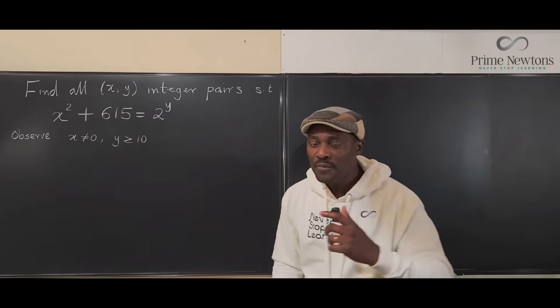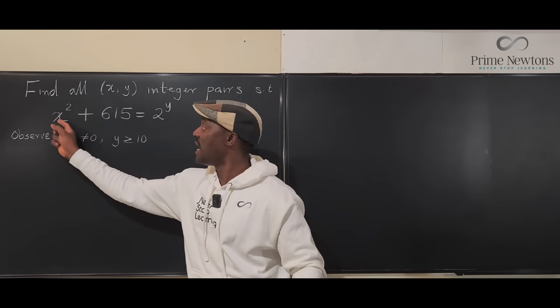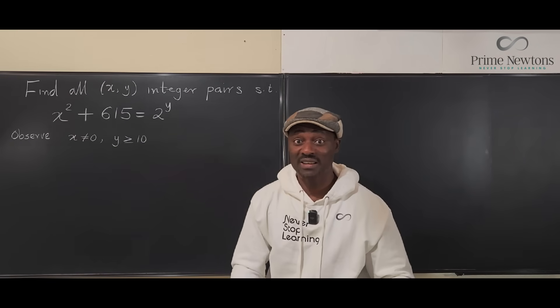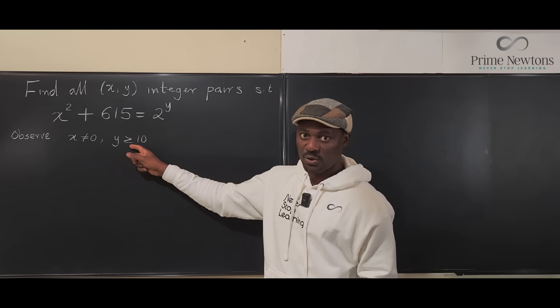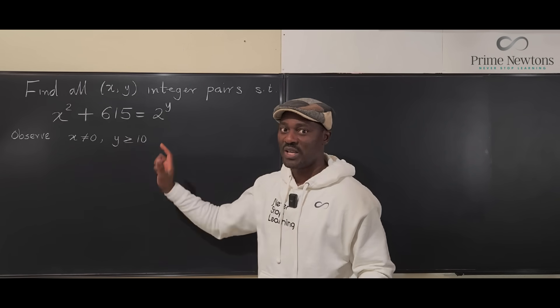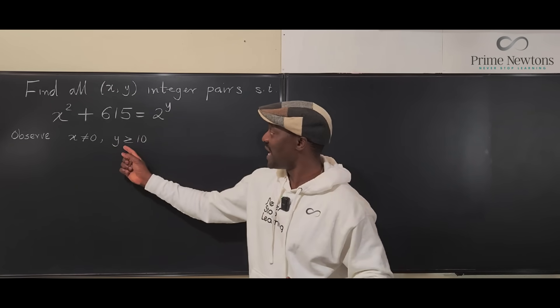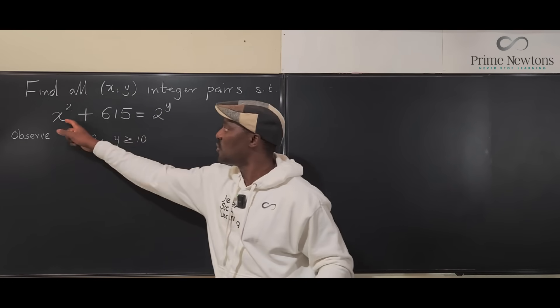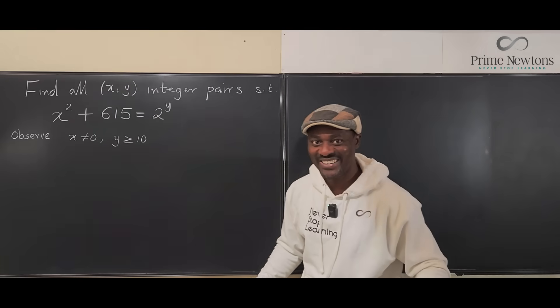Now that calms you down a bit because you already know you're not looking for some small y and x cannot be zero. Okay, now can x be positive or negative? Definitely because the square of a negative or a positive number is the same thing. So x is either positive or negative. The only thing it's not, it's not zero. Can y be zero? No, we already told you y cannot be zero. y is greater than or equal to 10 and y is not negative. In fact, it doesn't make sense for y to be negative because if y is negative, this would be a fraction. You can't add two integers and get a fraction. Getting comfortable here.